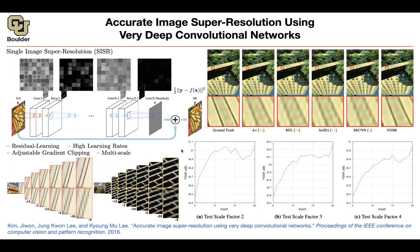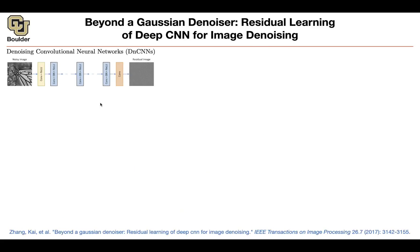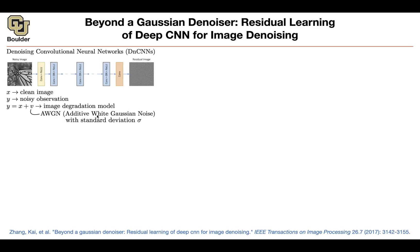Let's look at another paper for image denoising. The idea is that rather than learning a fully non-linear function from one input image to the denoised image, you can actually learn the residual. Learning the residual is much simpler. Mathematically, there is a clean image and a noisy observation — you could have additive white Gaussian noise, but you don't have to make this assumption because we are going beyond the Gaussian denoiser.